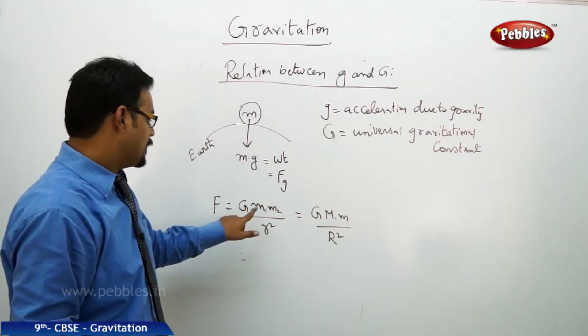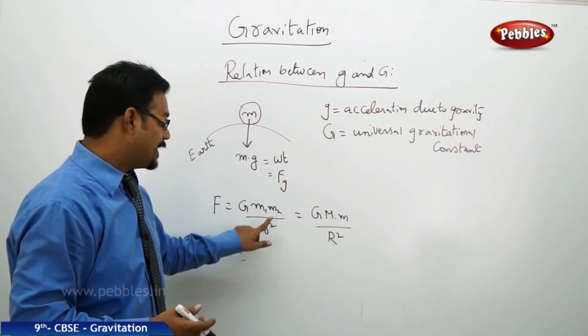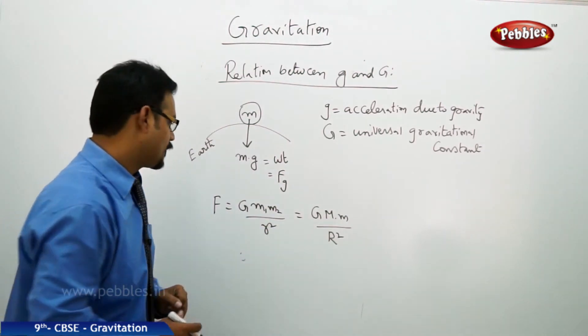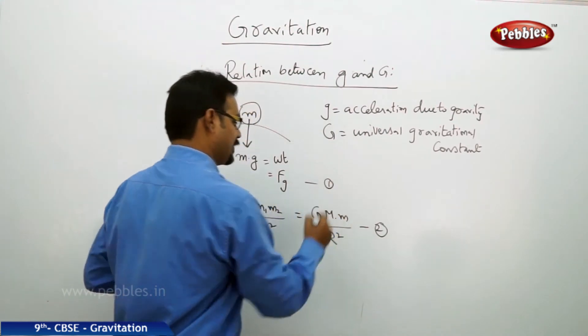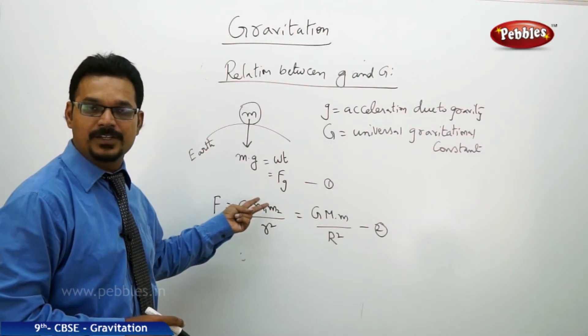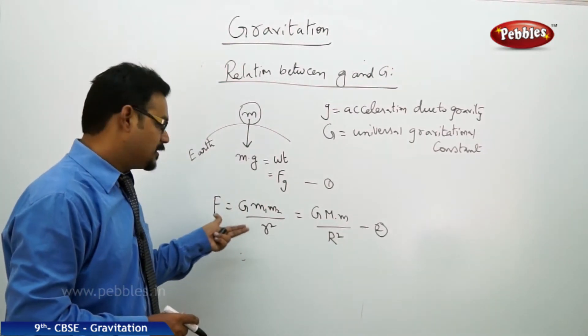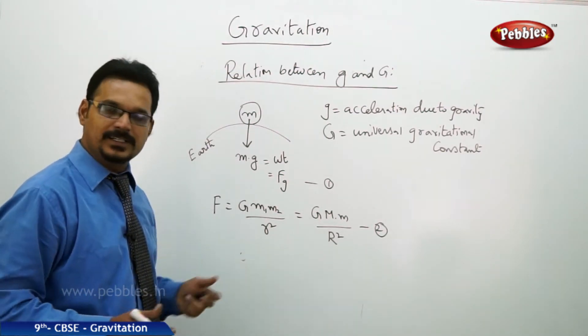So this weight also equals to force of gravitation. But according to Newton's law of gravitation we understand that f equals to G m1 m2 by r square. Apply this formula to this diagram and this formula changes to G capital M small m by capital R square. m1 is the mass of the earth, mass of the earth is capital M. m2 is mass of the body, small m. r square is radius of the earth. So this is law of gravitation, this is weight of the body. But both are same, law of gravitation and weight of the body, because law of gravitation says this is the force by the earth. Weight is also force by the earth.